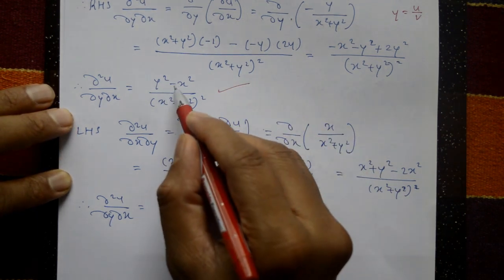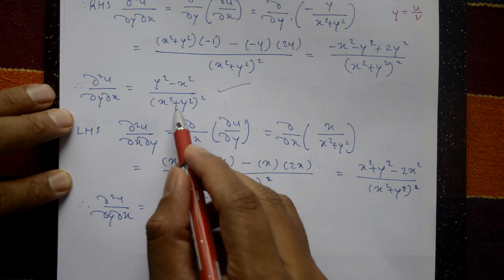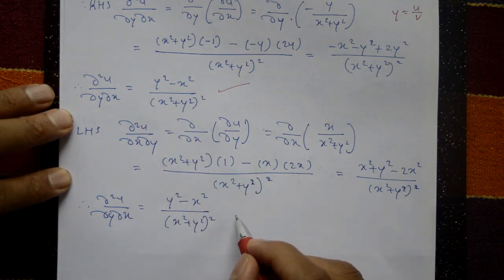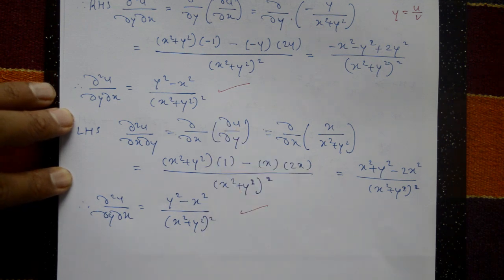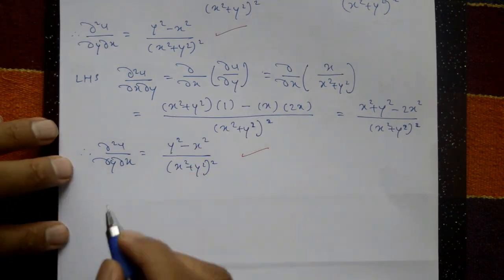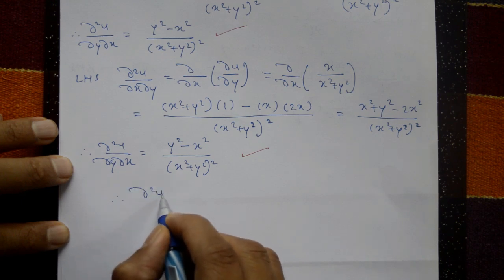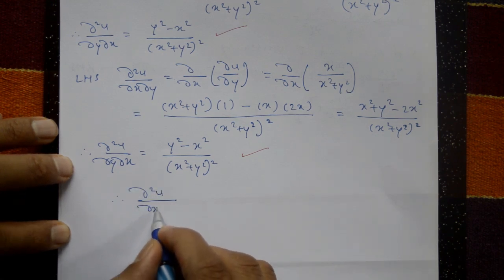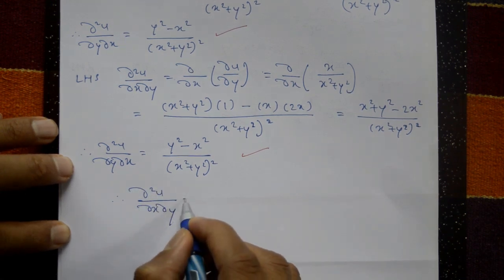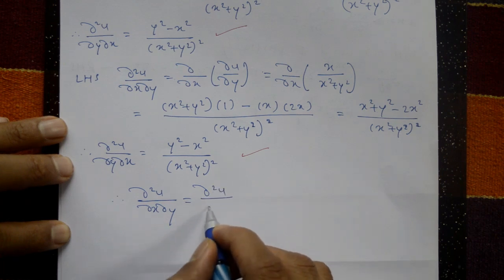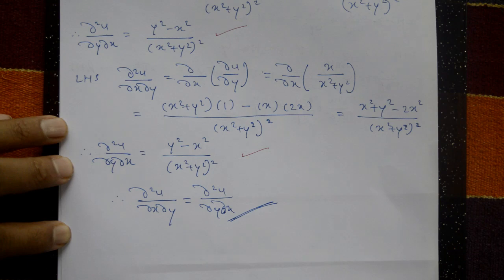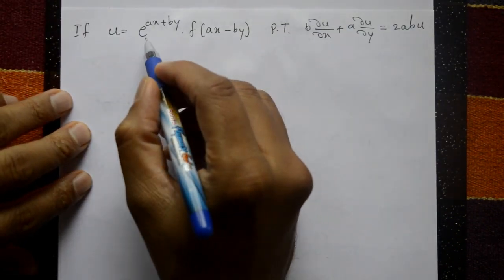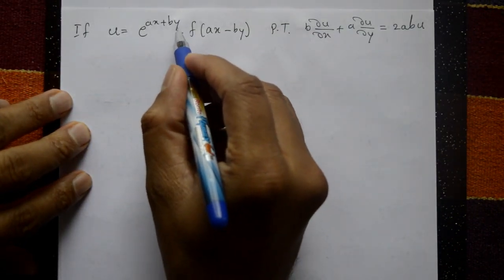The right hand side answer is (y² − x²)/(x² + y²)² and the left hand side answer is also (y² − x²)/(x² + y²)². Both are the same, therefore ∂²u/∂x∂y equals ∂²u/∂y∂x. The answer is verified.